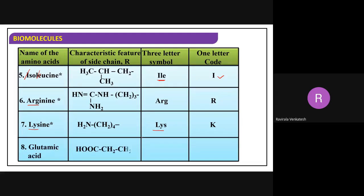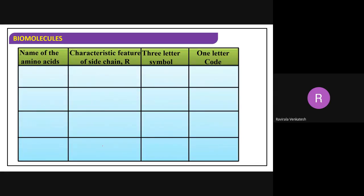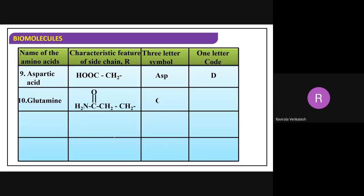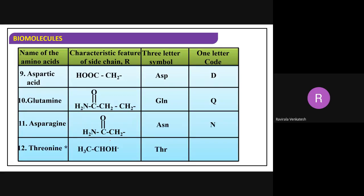Glutamic acid - symbol GLU. The structure of glutamic acid has NH2, then two CH2 groups, then a COOH group - it is an acidic amino acid. Then aspartic acid, glutamine, and asparagine. These are all R groups that you place in the structure.